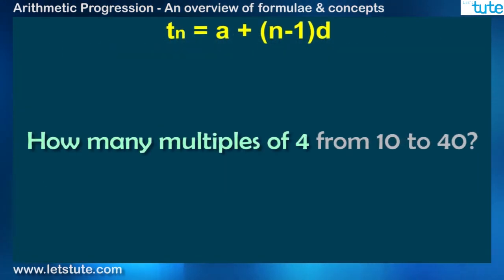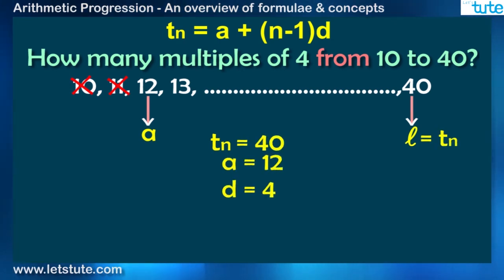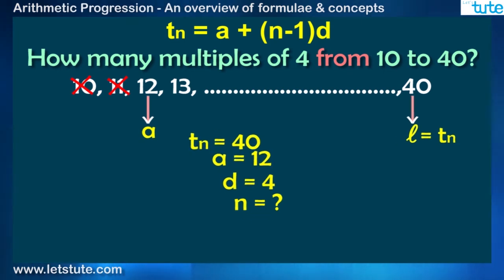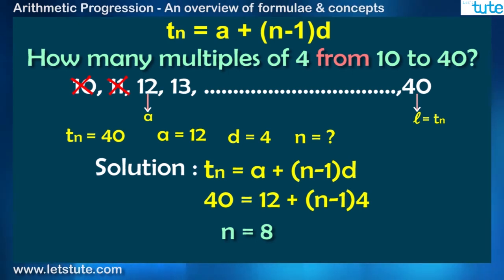For example, how many multiples of 4 from 10 to 40? So the first multiple is 12 because 10 cannot be divided by 4, and the last multiple is 40, right? So take Tn which is 40, A as 12, and D equals 4 and find out n. So you get n equals 8. That means there are 8 multiples of 4 from 10 to 40.